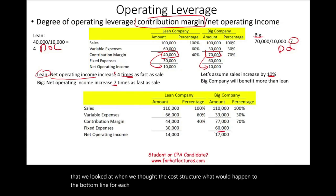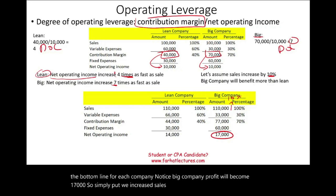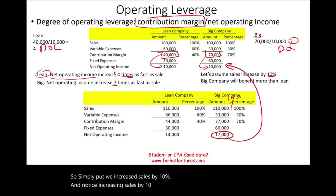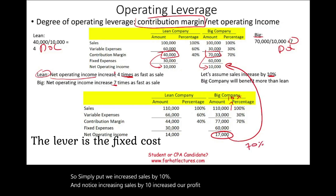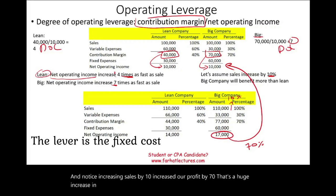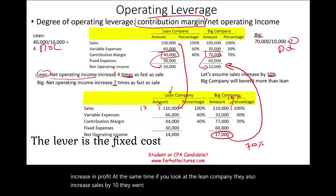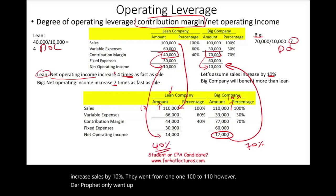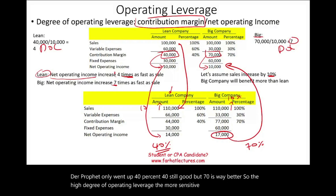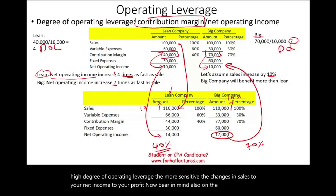Big company's profit will become $17,000. We increased sales by 10%, and that increased profit by 70% — a huge increase. At the same time, lean company also increased sales by 10%, going from 100 to 110, but their profit only went up 40%. 40% is still good, but 70% is way better. So the higher the degree of operating leverage, the more sensitive the changes in sales are to your net income. Bear in mind, on the downturn that's also true, so you have to be very careful.